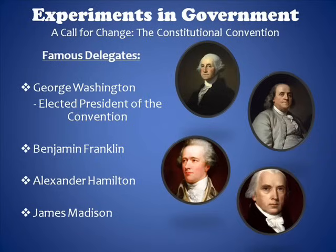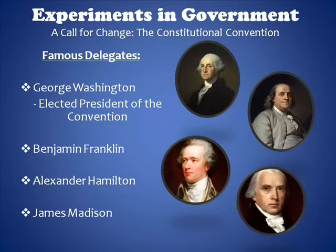At this convention were some of the brightest and most well-respected minds of that time period. George Washington was so well-respected that the delegates at once elected him president of the convention. Alexander Hamilton of New York had served as Washington's private secretary during the Revolution, and he despised the Articles of Confederation. He wrote that the nation is sick and wants powerful remedies, and his prescription was a strong central government.